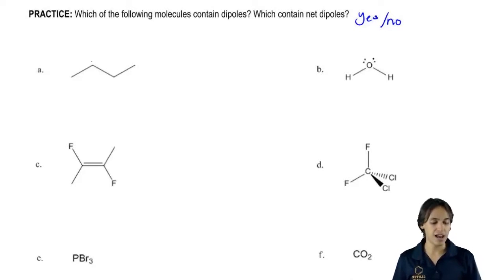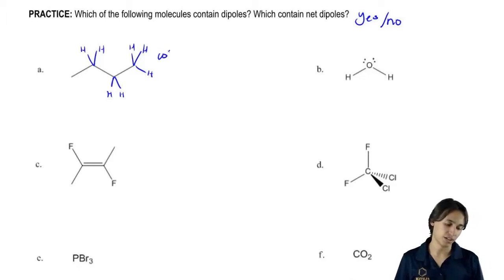So for A and B, A has a bunch of hydrogens on it and remember what I said about carbon and hydrogen. What kind of bond is that? That's going to be covalent.